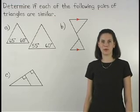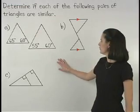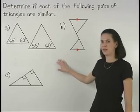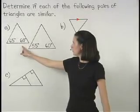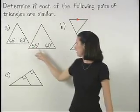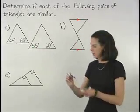In this example, we're asked to determine if each of the following pairs of triangles are similar. In Part A, notice that we're only given one pair of congruent angles, the 60 degree angles.